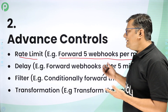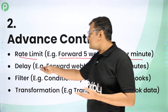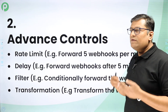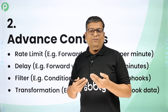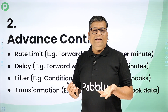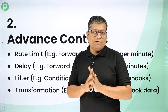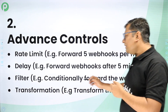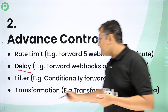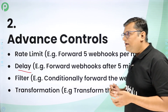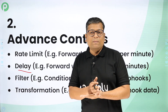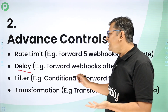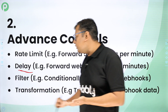You can control different rate limiting settings inside Pablyhook as per your requirement — even on an hourly basis, such as forwarding only 1,000 incoming webhooks to your destination per hour. You can also delay webhooks, saying you want to send a webhook after a delay of five minutes to the destination. Delay handling can also be managed by Pablyhook.